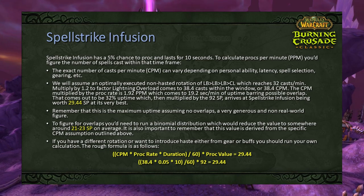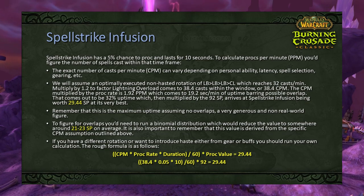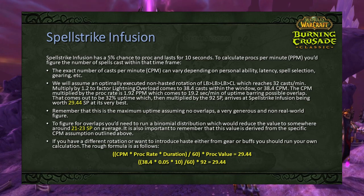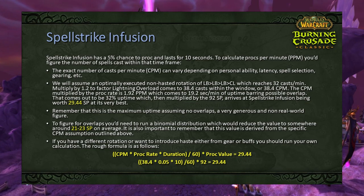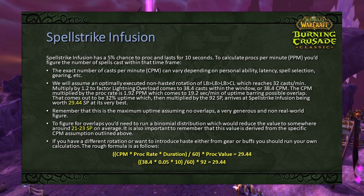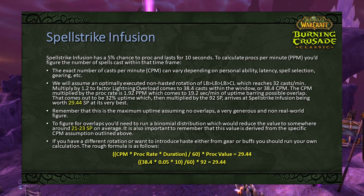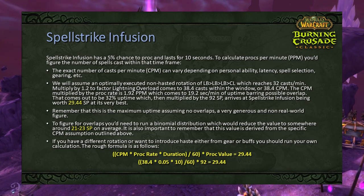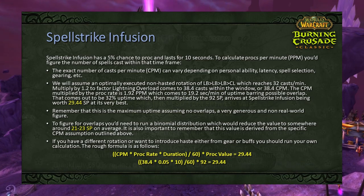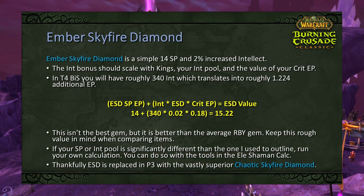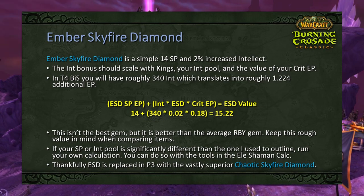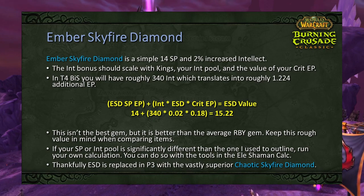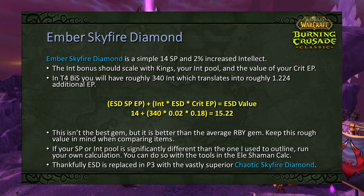The Spellstrike set bonus provides Spellstrike Infusion — a 5% proc chance on harmful spells to increase subsequent spell damage by 92 for 10 seconds. To determine its absolute value, you must first know how many casts per minute you have. We can assume a maximum value of 29.44 spell power on a 3 Lightning Bolt/Chain Lightning rotation, though a more accurate figure is 21-23 spell power — essentially on par with Netherstrike. Use the shaman calculator to derive your personal relative spell power value.